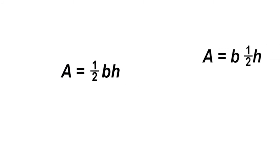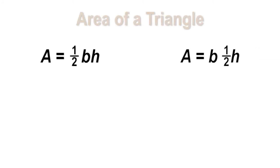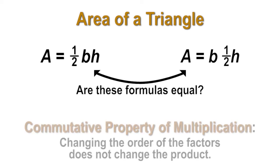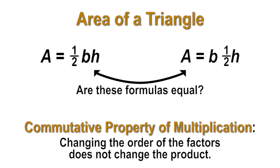Earlier, we found that the formula for the area of the triangle was area equals base times one-half height. Are these two formulas the same? They are, because the commutative property of multiplication states that when multiplying, the order does not matter. Therefore, the one half in the second formula can be moved to the front and the answer will still be the same.